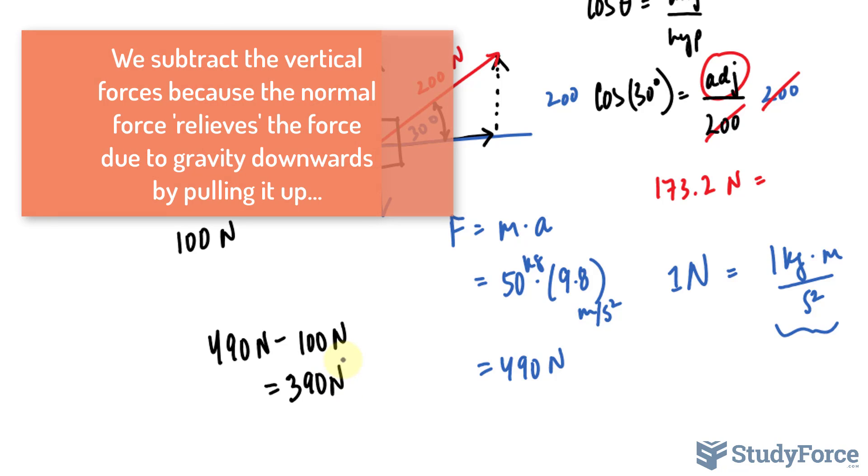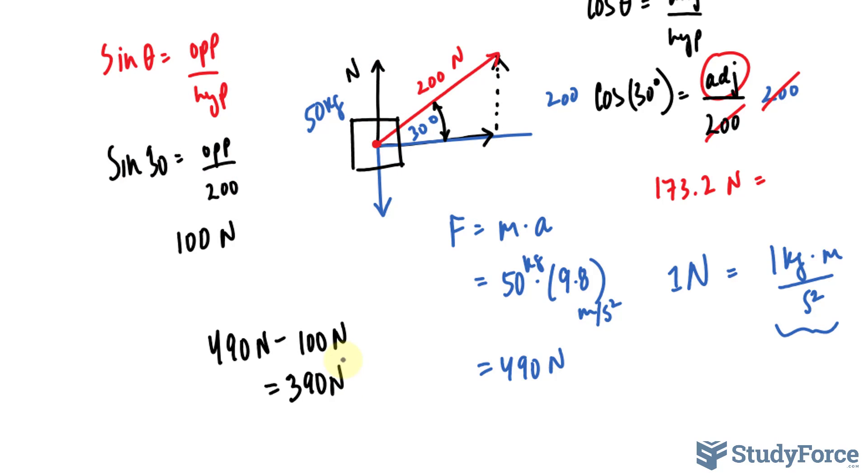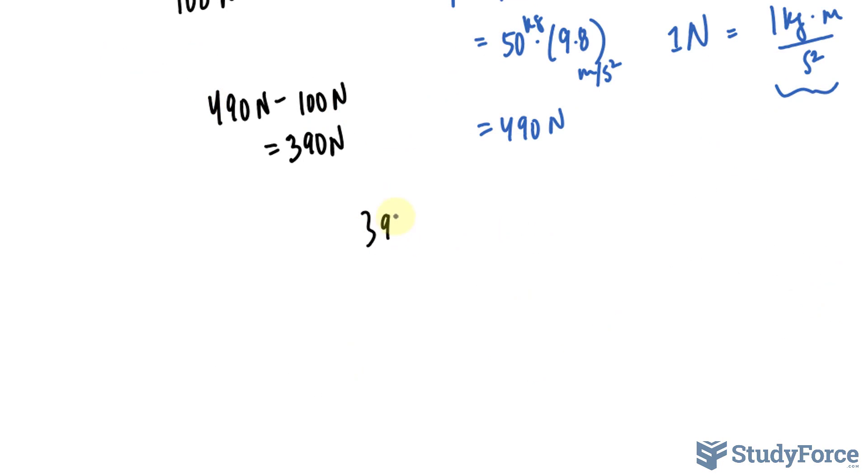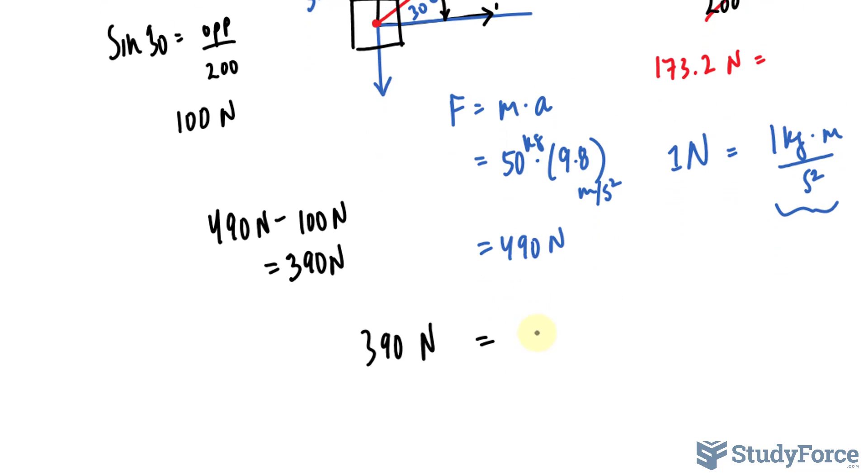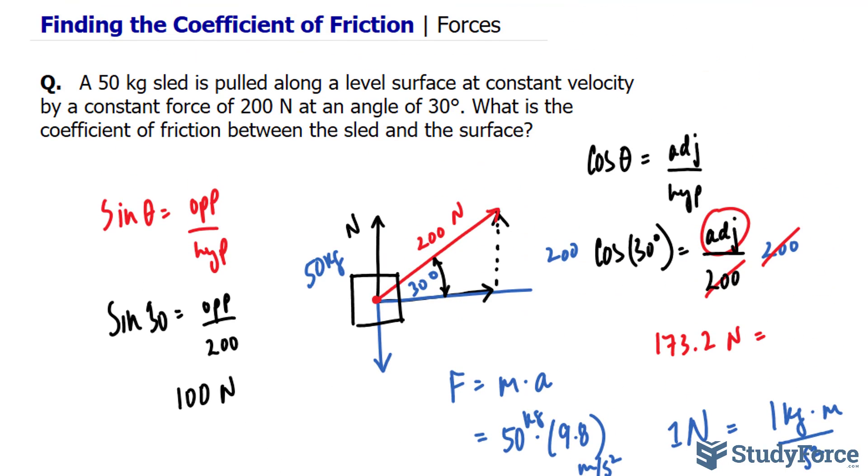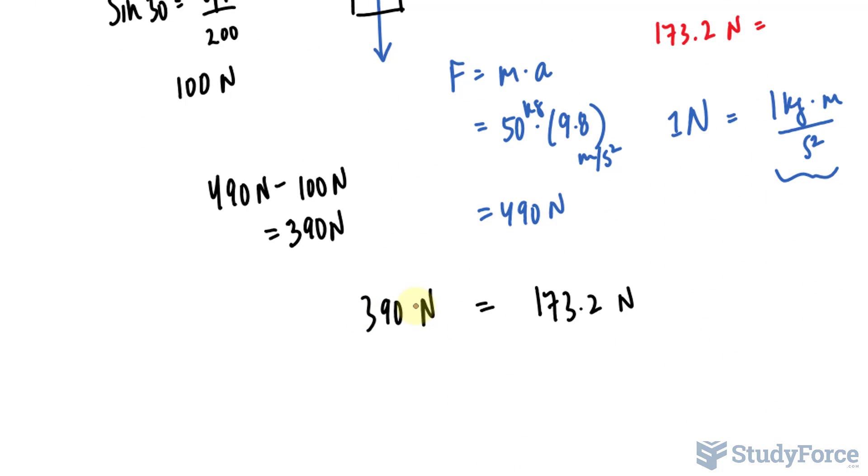Now, since the sled is moving at a constant velocity, the forces that are acting on this sled, this value of 390 newtons, must be in equilibrium with the horizontal force being exerted to the right. Except, remember, there is friction involved that is slowing down this sled. And we take our coefficient of friction, which I'll represent by the Greek letter mu, and multiply it to 390 newtons.